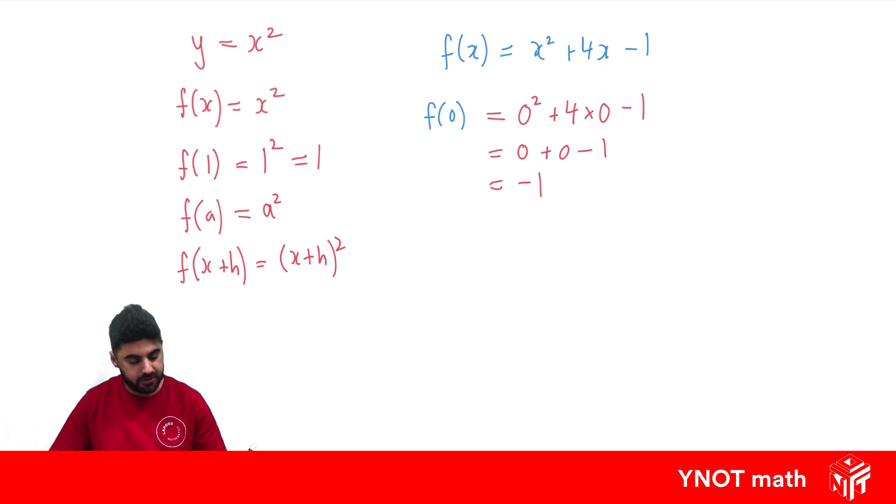And you can think about it just like your y value. So what's the f of minus 3? Wherever I see x, I'm replacing it with minus 3. So it'd be minus 3 squared plus 4 times minus 3, minus 1.